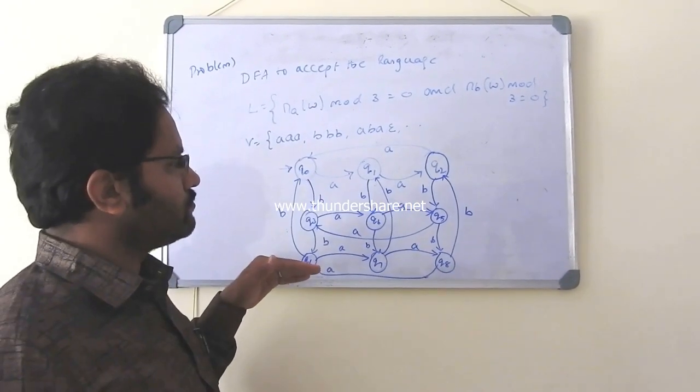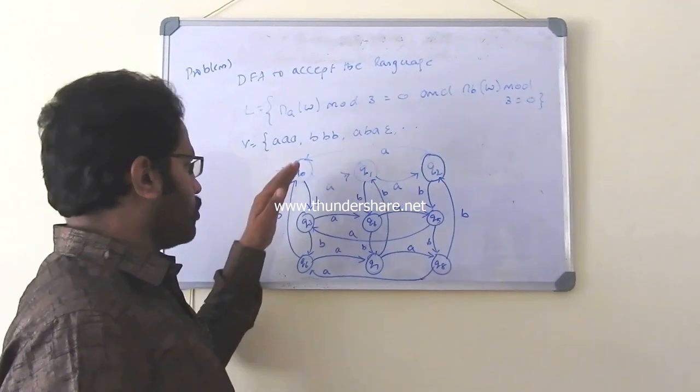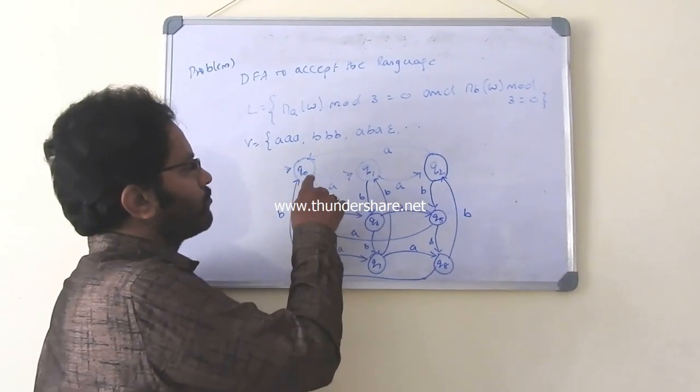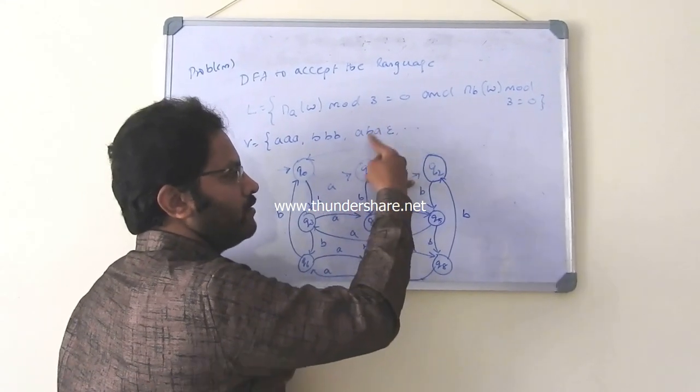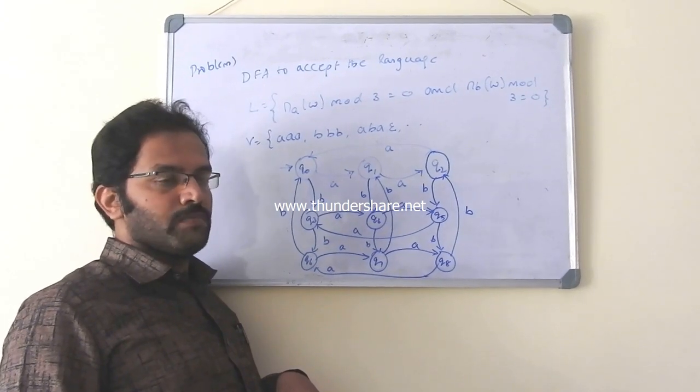And row wise, you make transition for A. Column wise, make transition for B. See here, Q naught with A is Q1, Q1 with A is Q2, and come back to Q naught from the state Q2 with the input symbol A.